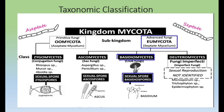The second class is Basidiomycetes, also known as club fungi. They are called club fungi because their sexual spores are enclosed in a club-like structure called a basidium.